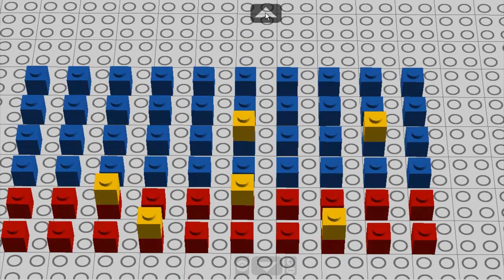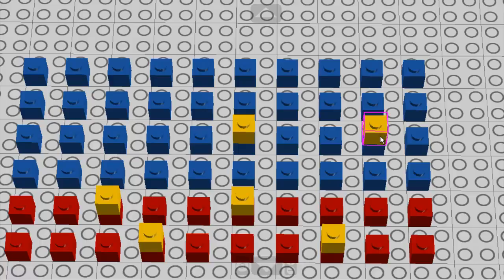And the yellow bricks, they have two different colors in them. Two of them have also blue in them and four of them also have red color in them.